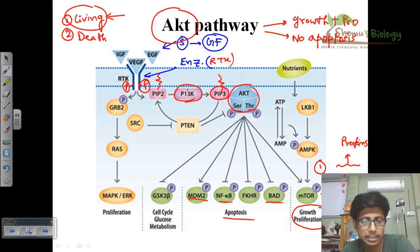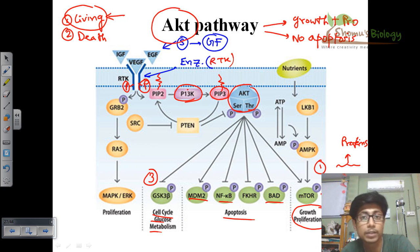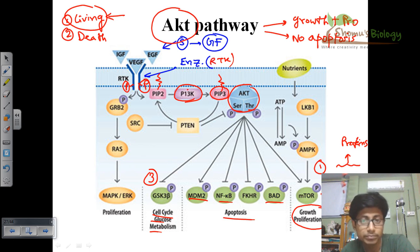The third function of AKT is that it helps in cell cycle regulation and glucose metabolism. As the cell grows, the cell cycle must also occur so the cell can divide and grow. This is another important part of the AKT pathway.